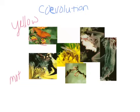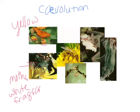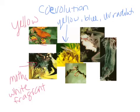Moths are nocturnal, so the flowers they pollinate tend to be white — easier to see in the evening — and very fragrant, making them easier for the moth to find in the dark. Bees see yellow and blue, and also detect UV radiation, so all of those would be good characteristics for a plant to have to help bees find it more easily.